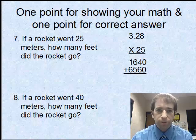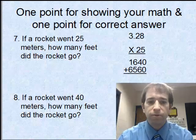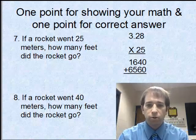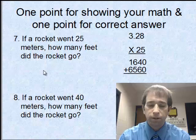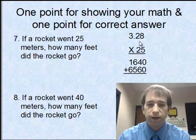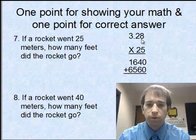Number 7 reads: If your rocket went 25 meters, how many feet did your rocket go? We're going to set that up as a math problem with 3.28 feet equaling one meter. We're going to times it by 25 because for number 7 it went 25 meters. So 3.28 times 25.